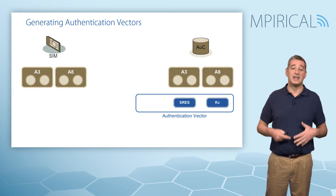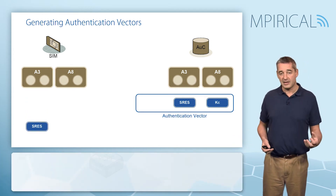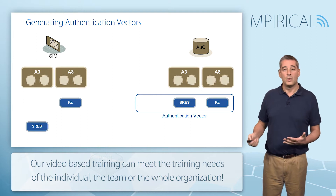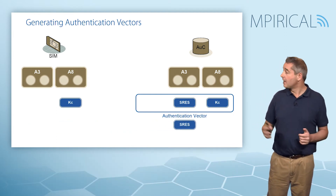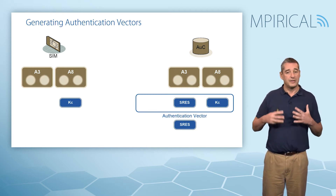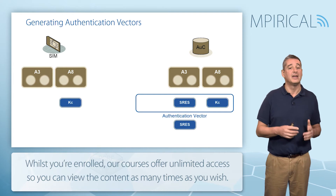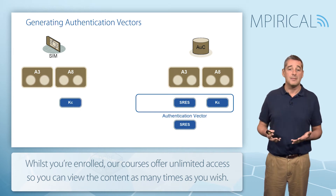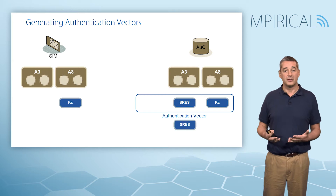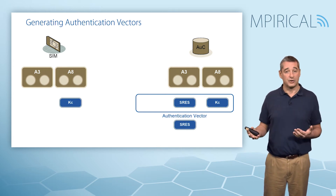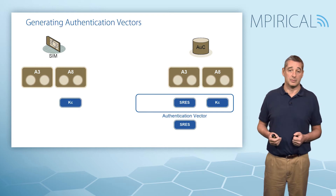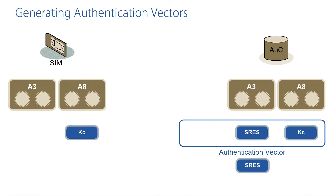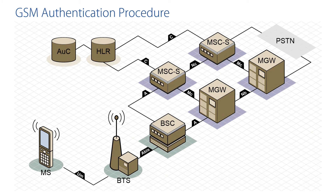The result of feeding into the A3 and A8 algorithms is again the generation of SRES, the signed response, and Kc, the cipher key. To authenticate the SIM card, SRES is returned from the SIM back towards the network, where we verify that the SRES generated on the SIM card is the same as the SRES generated in the authentication center. If they are the same, authentication is successful. If not, it means the KI values or the A3 algorithms are not consistent — since these are secret, that would suggest an illegal SIM card on the network.